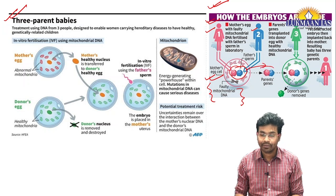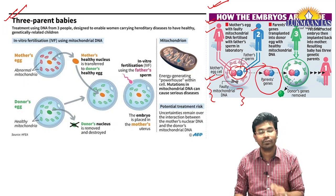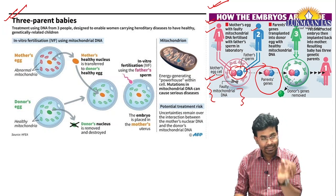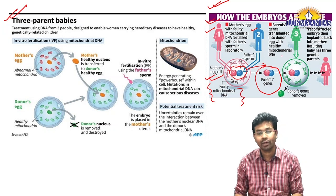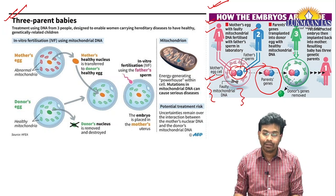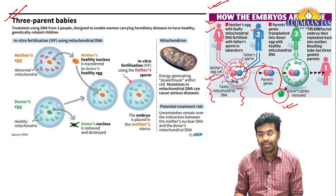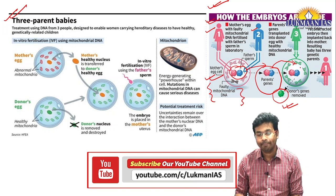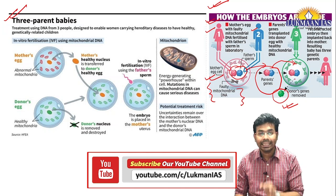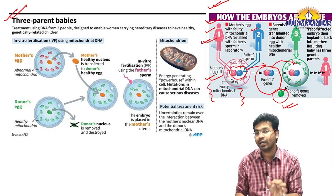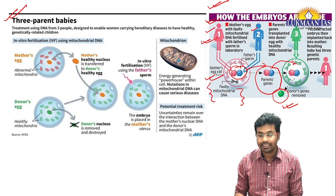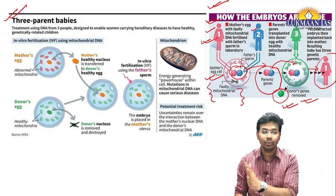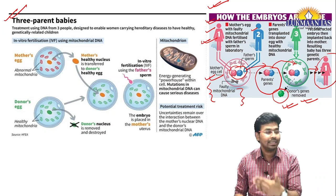We take out the genetic information — the nucleus — from this egg. Then we implant this nucleus, the zygote, into another healthy donor's egg. From the donor's egg, we first remove its nucleus, and in place of that nucleus we transfer the parent's genes. This donor's egg has healthy mitochondria, unlike the original mother's egg. After this, the resulting zygote is transferred back into the original mother. That is how we create three-parent babies.